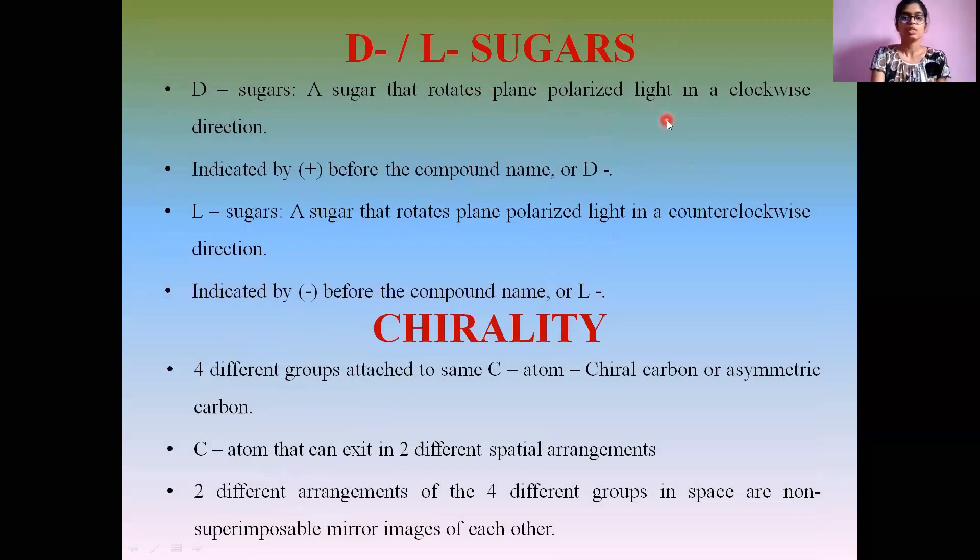D and L sugars: the D sugars, also known as dextrorotatory sugars, rotate the plane polarized light in the clockwise direction and are indicated by the sign plus or with the prefix D.